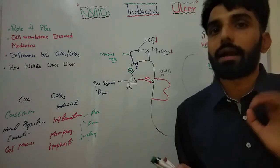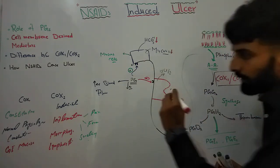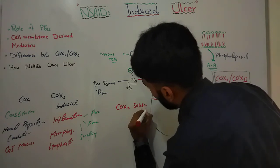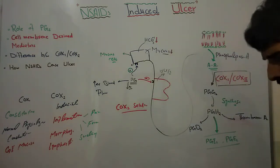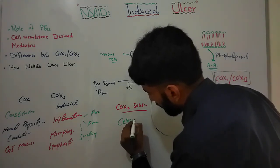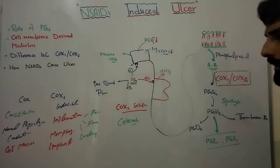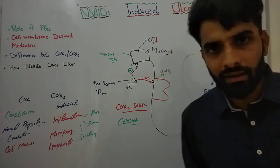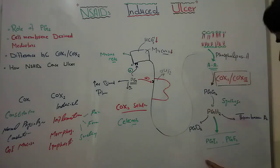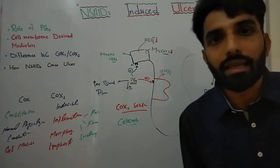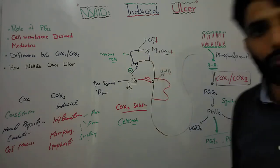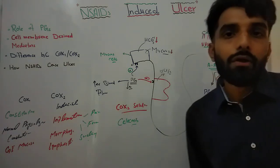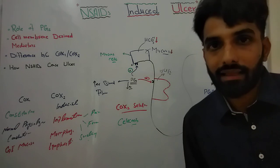There are two basic ways to protect against this. Point number one: by giving a selective COX-2 inhibitor. There are certain drugs — such as celecoxib — which will only block COX-2 enzyme and will not block COX-1. When COX-1 is not blocked, the production of prostaglandin I2 and prostaglandin E2 will not decrease, their protective effect will remain, and by blocking COX-2 we can reduce the risk of developing gastric ulcer.